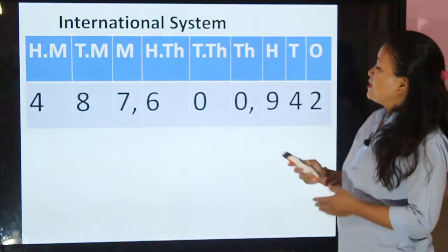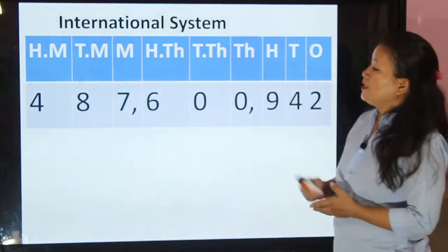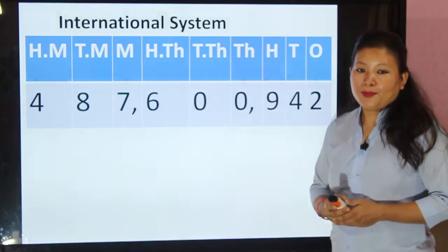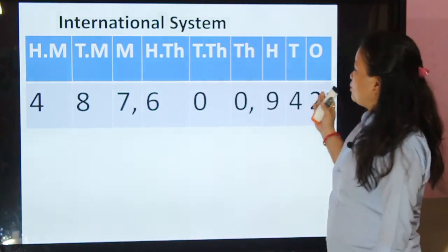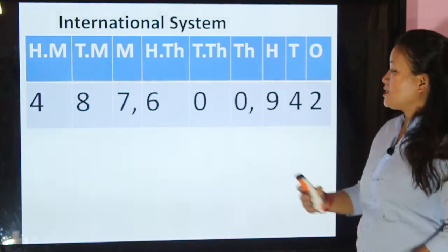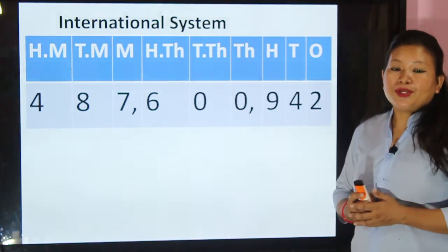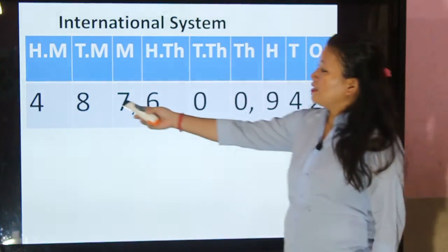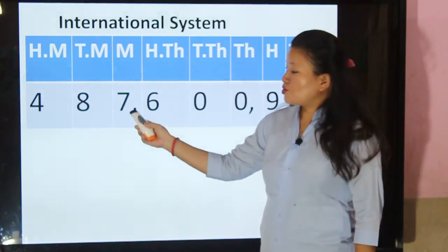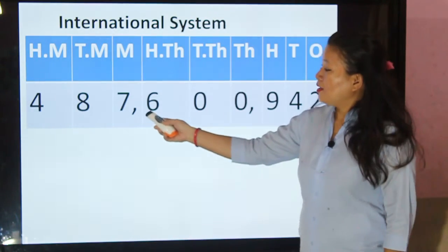This is the place value table of the international system: ones, tens, hundreds, thousands, ten thousands, hundred thousands, millions, ten millions, hundred millions. Now let's place each digit from the right. I have placed the digits here. After each period we put a comma — the first three places are in the million period, so we put a comma after that period, and the next three are in the thousand period, so we put a comma there too.